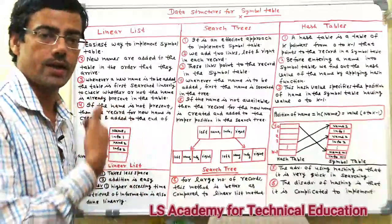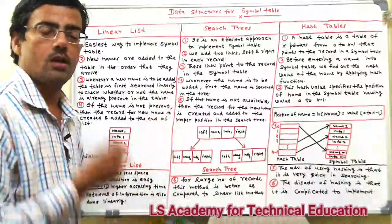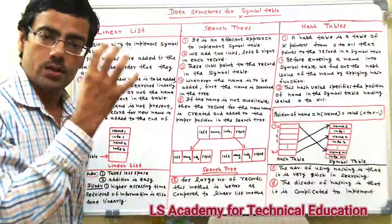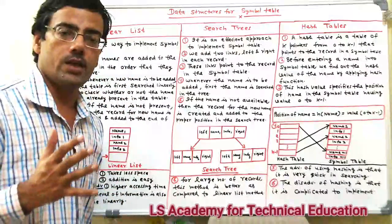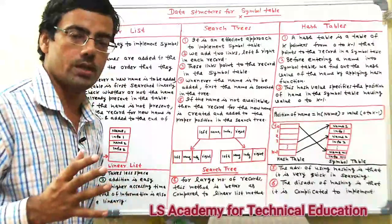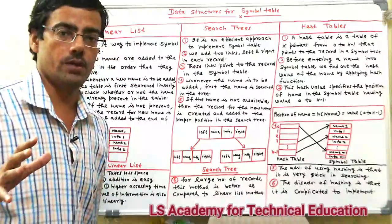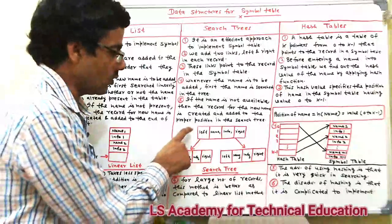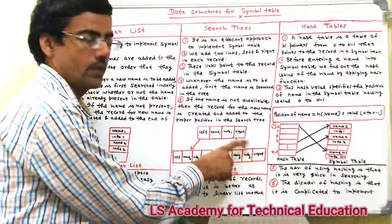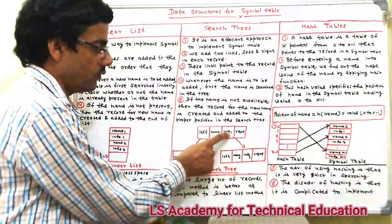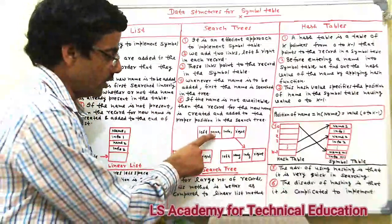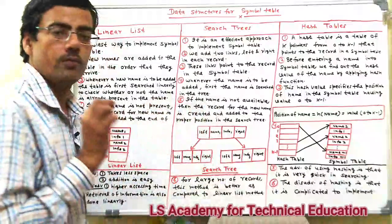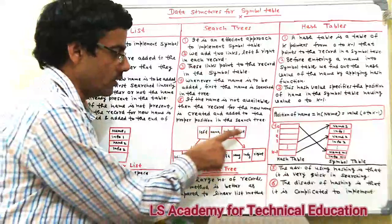The other method is the search tree. In the search tree method, symbol table data is stored using a binary search tree. In a binary search tree, data is stored in a tree-structured form. Each node contains name and info fields, as well as left and right links.